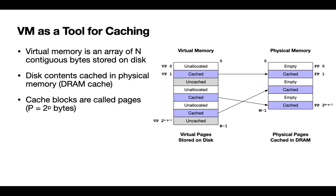Let's look in more detail at using virtual memory as a way to do caching. Virtual memory is essentially an array of n bytes stored on disk. We're not going to read information back and forth from disk in individual bytes — we want to bring in larger blocks, in the same way that we bring in cache lines larger than a single byte when caching in the CPU. These illustrations convey the notion of pages: virtual page 0, virtual page 1, up to the last page in virtual memory.